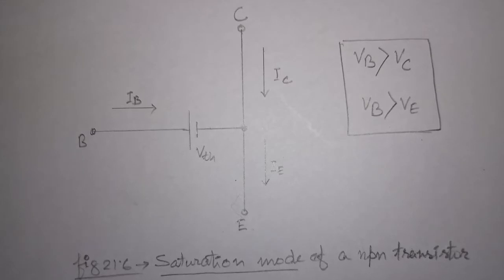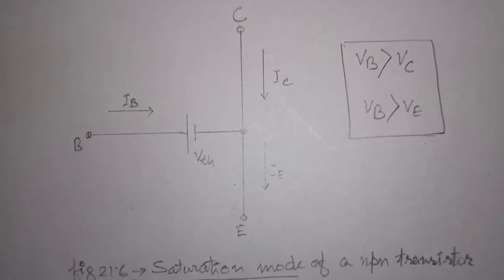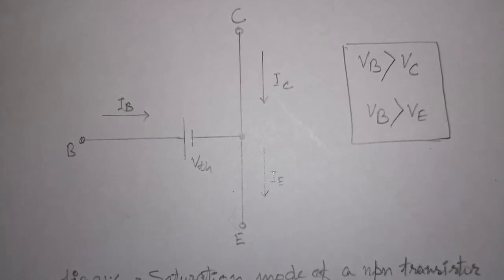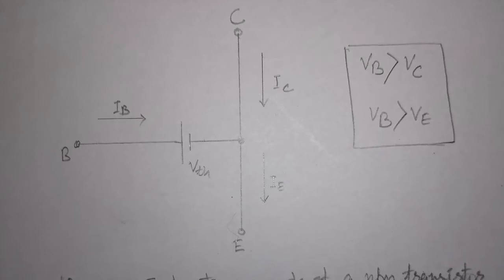In the saturation mode of operation, a transistor acts like a short circuit between collector and emitter. Both of the PN junctions in the transistor are forward biased.